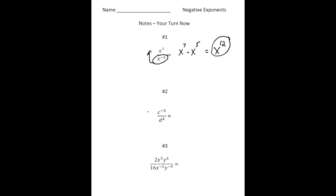Number two: we have c to the negative fifth power over d to the fourth power. The d to the fourth power stays where it is because it already has a positive exponent. But c to the negative fifth power comes down, making it c to the fifth. We need to put a 1 on the top, so it's 1 over d to the fourth, c to the fifth.